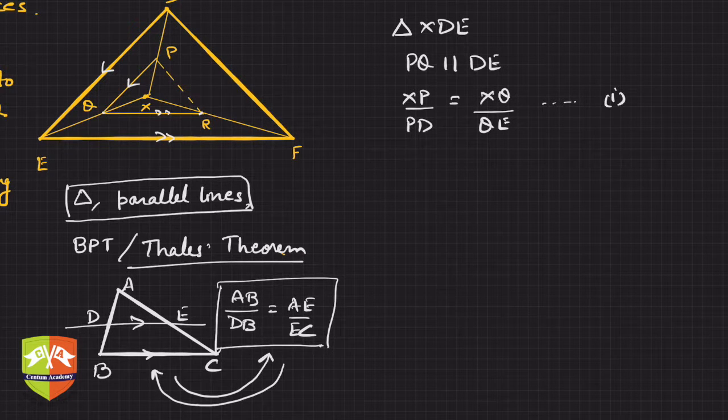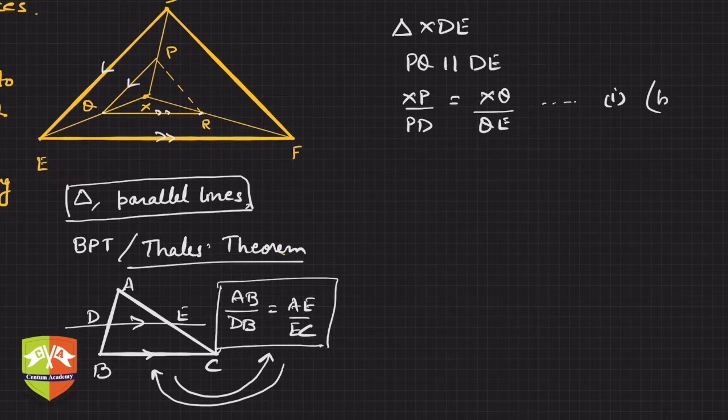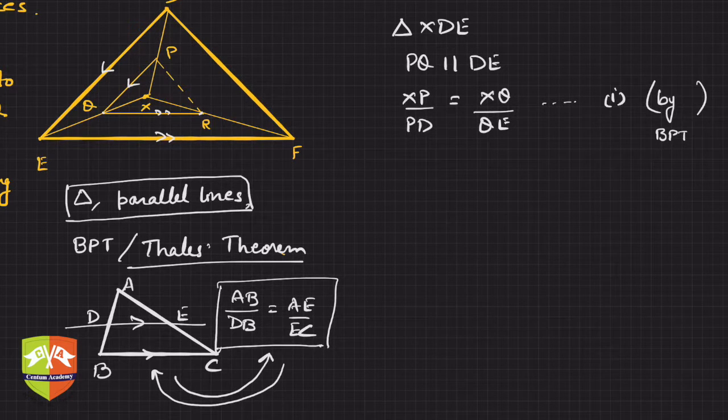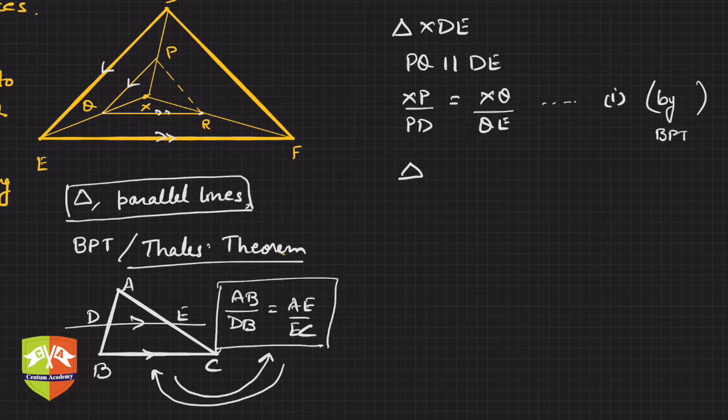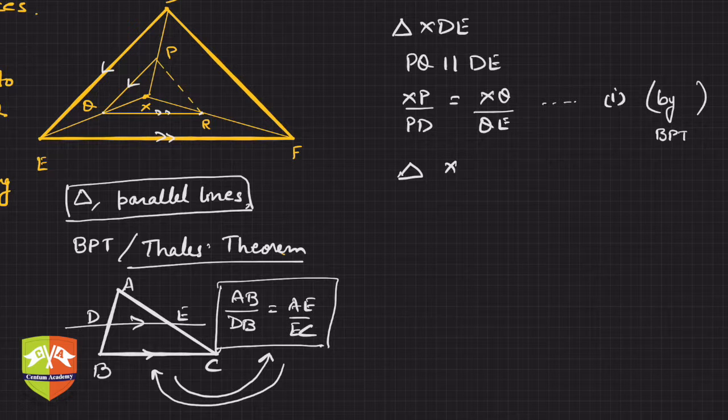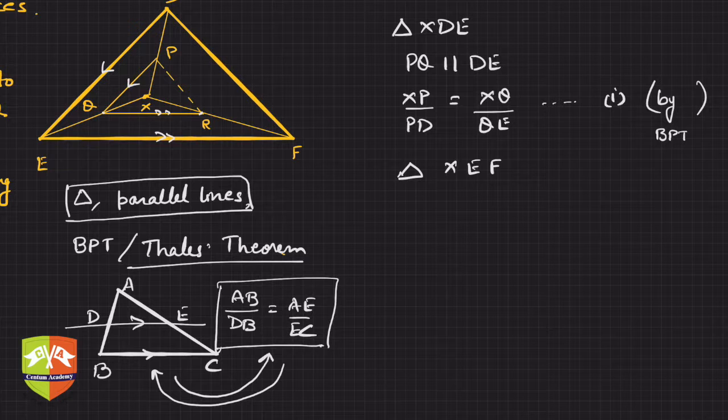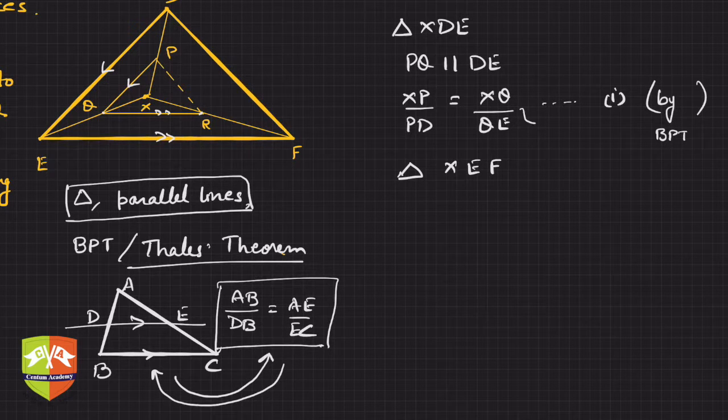Let this be relation number one. And why is this? This is by basic proportionality theorem. Now again in triangle XEF, I'm picking up that triangle where I can go ahead with this ratio.